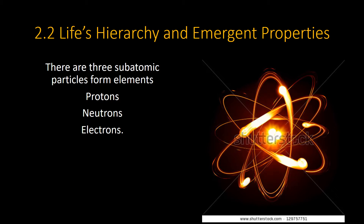Atoms are made up of subatomic particles. There are three that are important for us: protons, neutrons, and electrons. The nucleus of an atom is made of protons and neutrons. The electrons are much, much lighter — almost a thousand times lighter — and they're found outside the nucleus in what we call orbitals, or electron shells. Protons have a positive charge, neutrons have a neutral charge, and electrons have a negative charge.